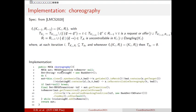Note that we can have different choreographies depending on how we select the transition that violates the branching condition. In this case we have a non-deterministic selection: we use parallel streams, so basically the first thread that finds a violating transition returns it. Depending on the order, we could select different transitions and produce different choreographies as output.